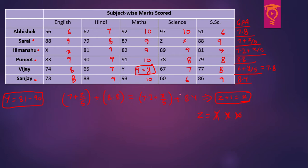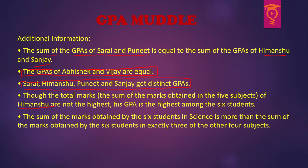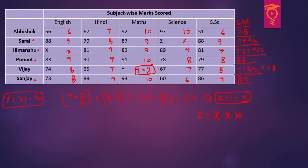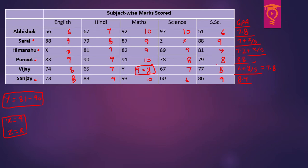According to the fourth point, Himanshu's GPA is supposed to be the highest. So small x cannot be 7, 6 or 5. If x is 10, z has to be 9 which is not possible. So we conclude that small x has to be 9 and for that small z has to be 8. Small y is 9, small x is 9, and small z is 8. So Himanshu's GPA is 9, Saral's GPA is 8.6, and Vijay's GPA is 7.8. We now clearly know the GPA of each and every student.